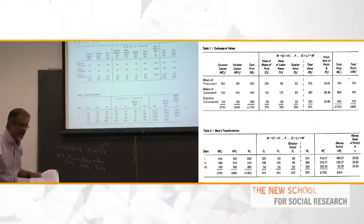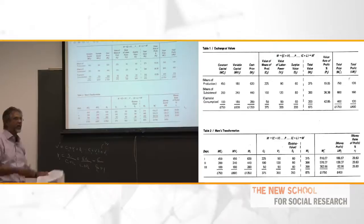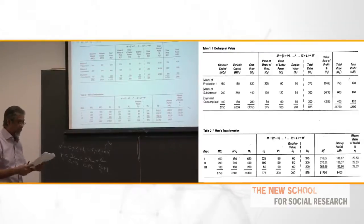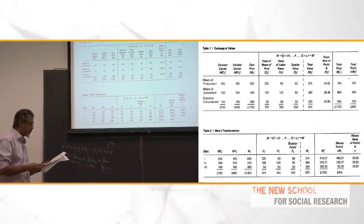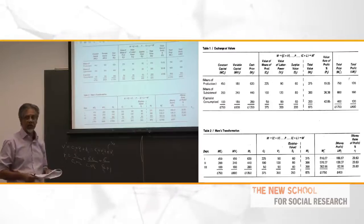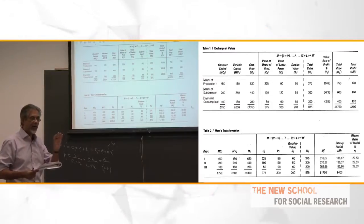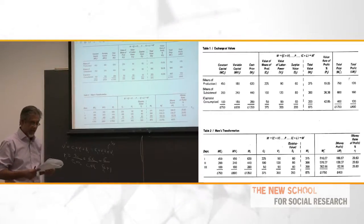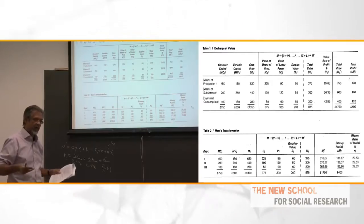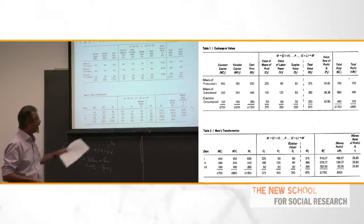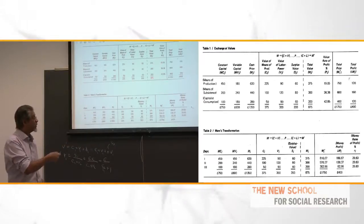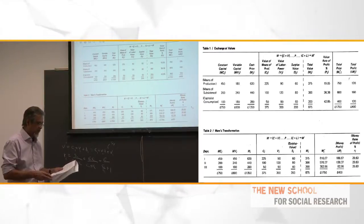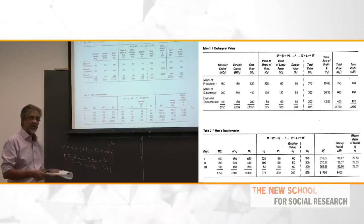These come from his notes, and the fragments of his notes that Engels chose to put into Volume 3 of Capital. So we don't know what else is there. One point is that this transformation was already worked out by Marx before the publication of Volume 1. Volumes 2 and 3 were written in draft form before Volume 1 was published. So when Marx is working in Volume 1 on the assumption that prices are proportional to labor time, he's already anticipating what he worked out in Volumes 2 and 3. These were written in 1863 to 1867, and Volume 1 was published in 1867.